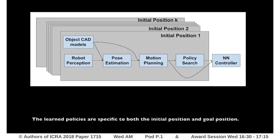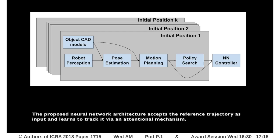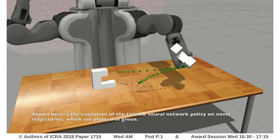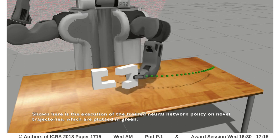The learned policies are specific to both the initial position and the goal position. To generalize across different conditions, we train a neural network policy to imitate a handful of policies considered as a training set. The proposed neural network architecture accepts the reference trajectory as input and learns to track it via an attentional mechanism. Shown here is the execution of the trained neural network policy on novel trajectories, which are plotted in green.